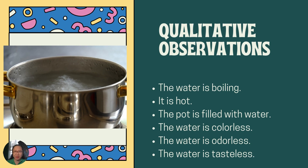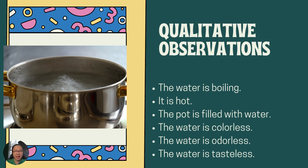Another example. Take a look at this image. From it, we can make qualitative observations like: the water is boiling, it is hot, the pot is filled with water, the water is colorless, the water is odorless, and the water is tasteless.